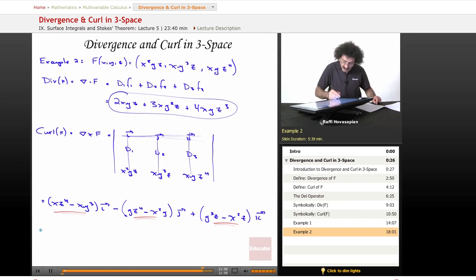Actually, you know what? Let me go ahead and write it out. So we've got x z to the fourth minus x y cubed. That's the first component function. We have y z to the fourth minus x squared y. And then we have y cubed z minus x squared z.